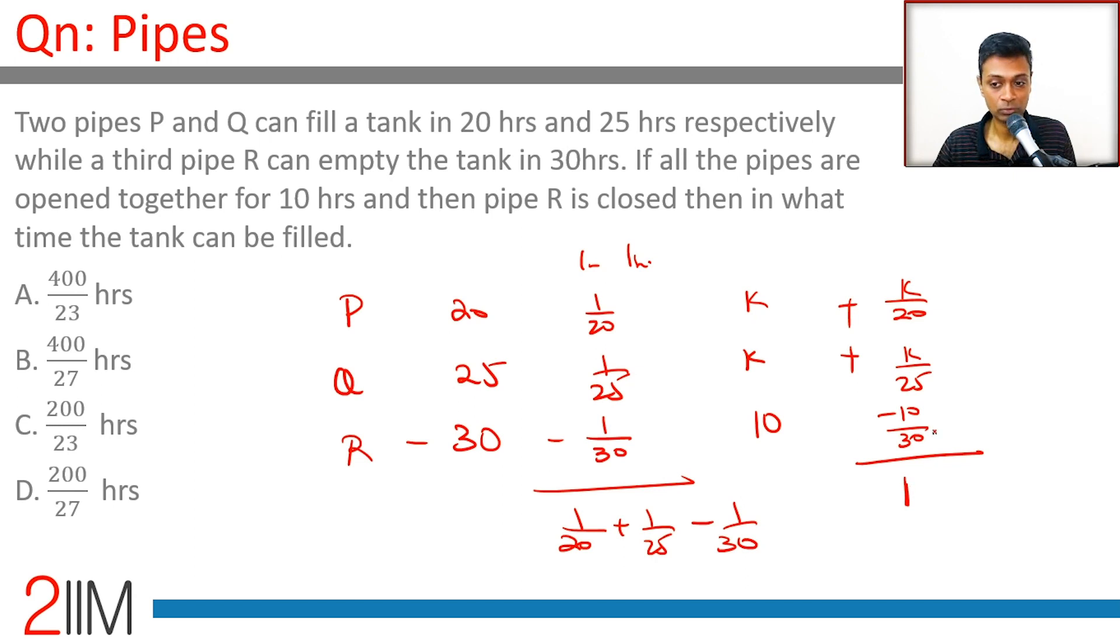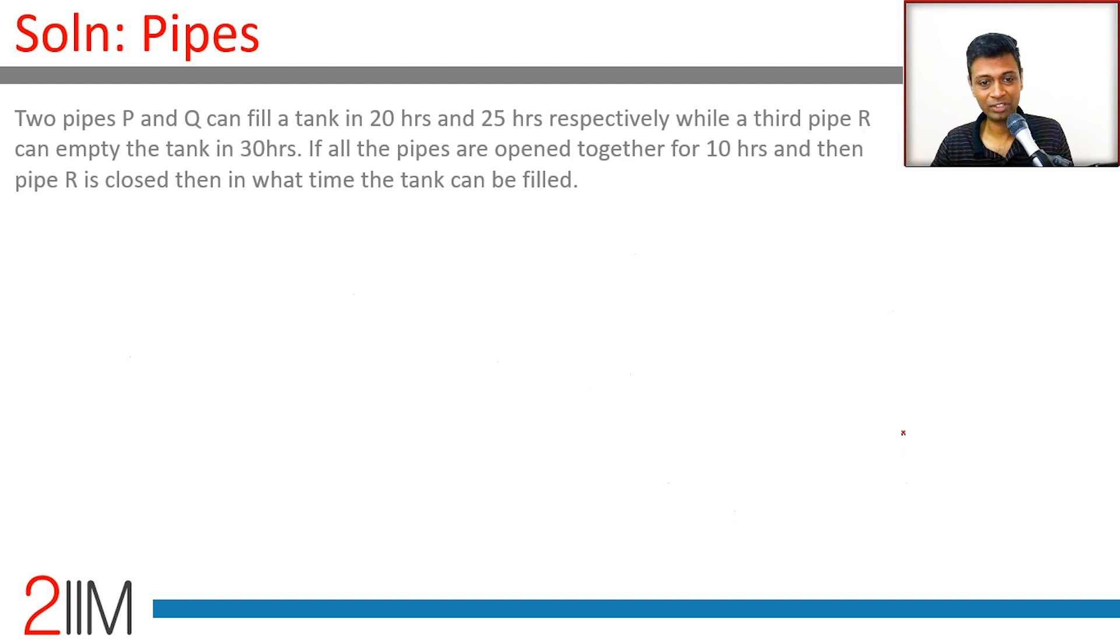10/30 is 1/3. We're effectively saying k/20 + k/25 - 1/3 = 1. The LCM of 20 and 25 is 100.